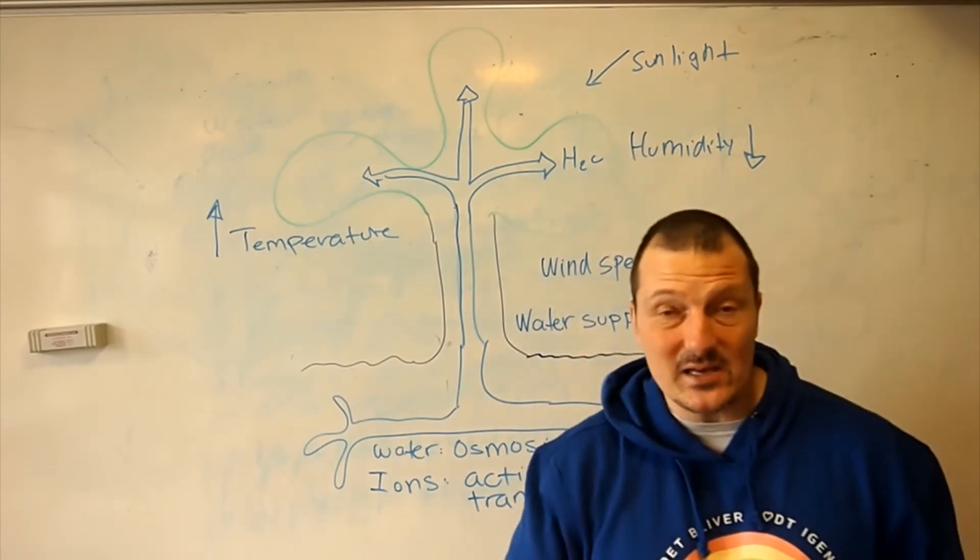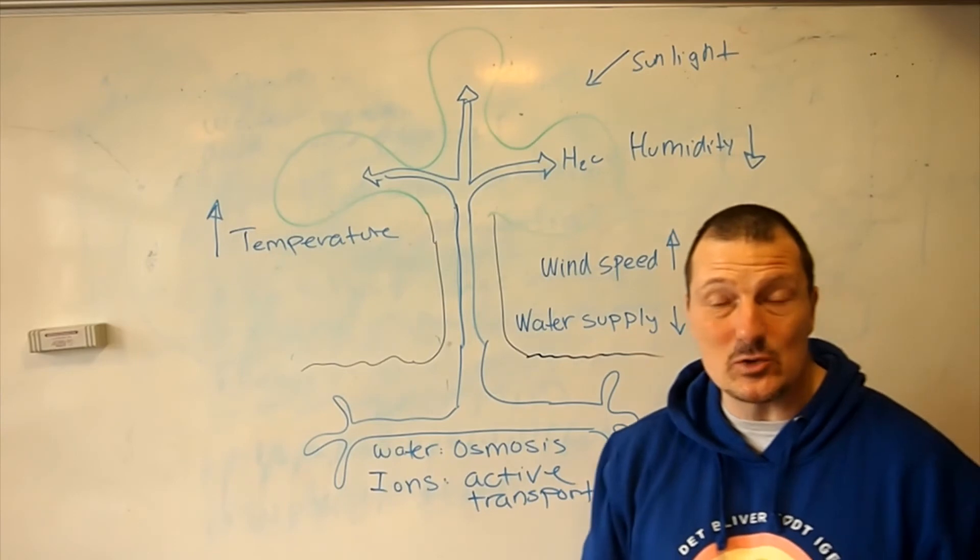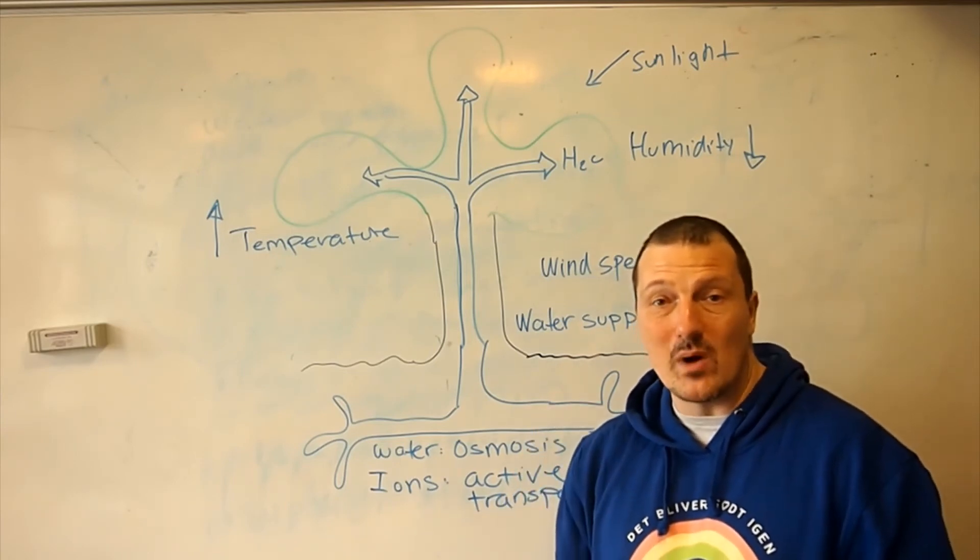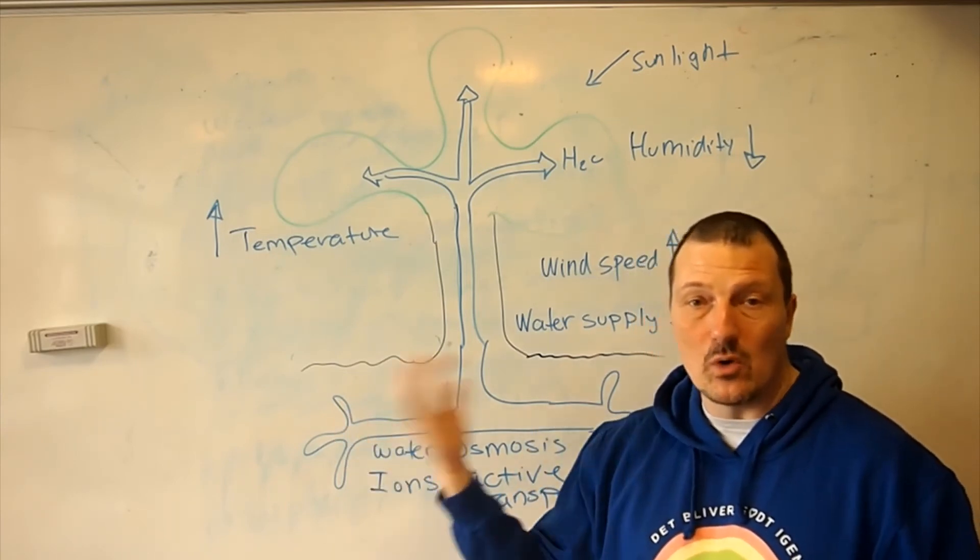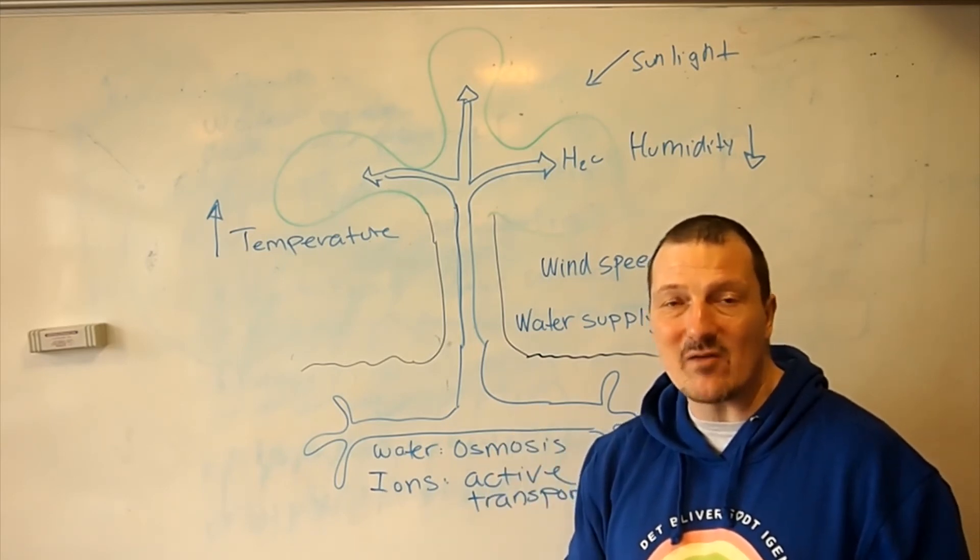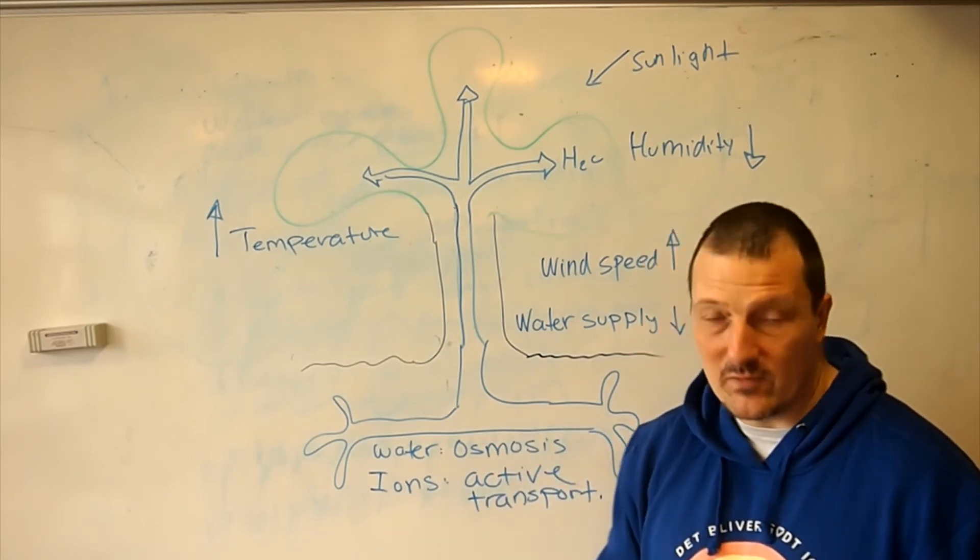If there's a lot of sunlight, the plant will need to take up more CO2. It will open up its stomata more and thereby it will also lose more water vapor and thereby have a higher rate of evaporation.